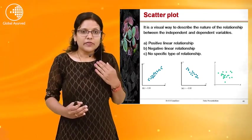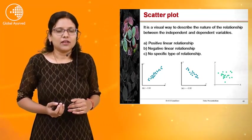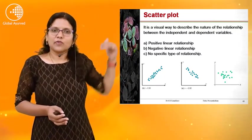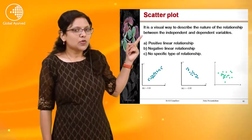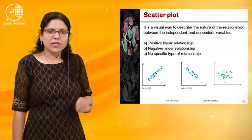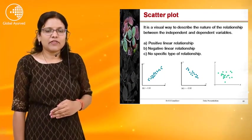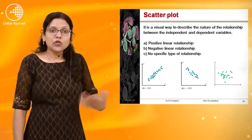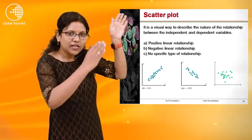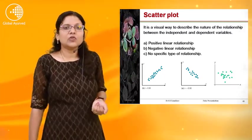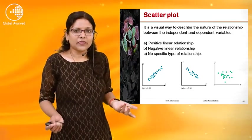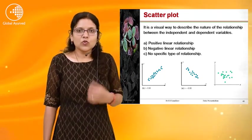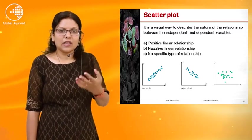The scatter plot is a visual way to describe the nature of the relationship between an independent variable and a dependent variable. To show correlation or association between two variables, we use the scatter plot. It can show a positive linear relationship — for example, as height increases, weight increases. A negative linear relationship means as height increases, weight decreases. Or there may be no specific type of relationship between the two variables. The scatter plot is used to show relationships between any independent and dependent variable.